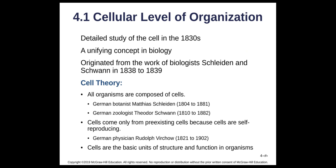We first started looking at cells in the early 1800s, when microscopes were developed and cells were among the first things seen under them. This led to a unifying concept in biology: that living things at their most basic unit are made of cells. Works by Schleiden and Schwann in the 1830s contributed to what we call the cell theory.